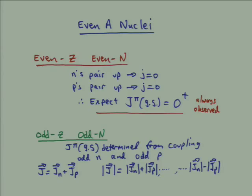Now we're going to talk about slightly more complicated nuclei, namely even-A nuclei. These are nuclei where you have either an even number of protons and an even number of neutrons, or an odd number of protons and an odd number of neutrons. In both cases the sum of A will be even.